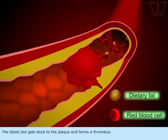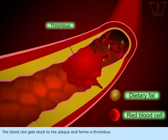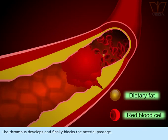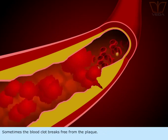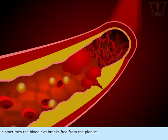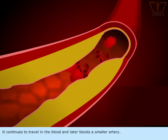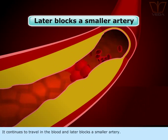The blood clot gets stuck to the plaque and forms a thrombus. The thrombus develops and finally blocks the arterial passage. Sometimes the blood clot breaks free from the plaque, continues to travel in the blood, and later blocks a small artery.